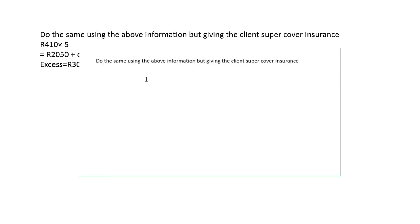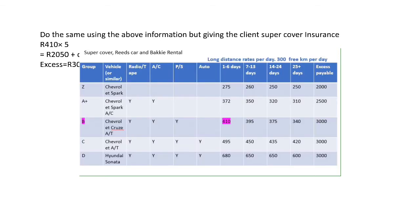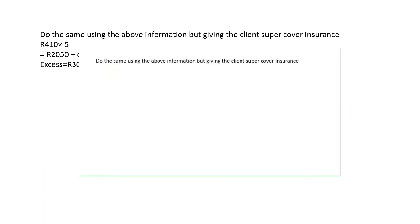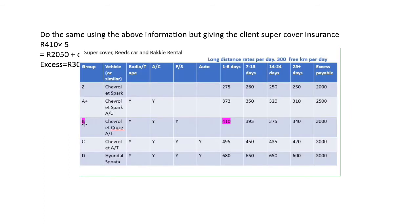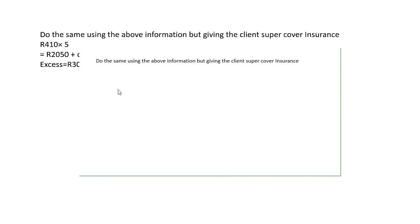After looking at the previous example, we will now attempt to answer the following question using the same information but now looking at the super cover insurance table. It's a group B car for five days, so we look at the first column — the amount is 410.